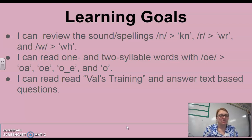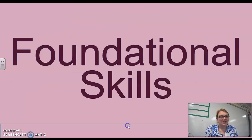You can read one and two syllable words with the O sound spelled O-A, O-E, O space E, and O. And then read the story Val's training and answer questions about the text.